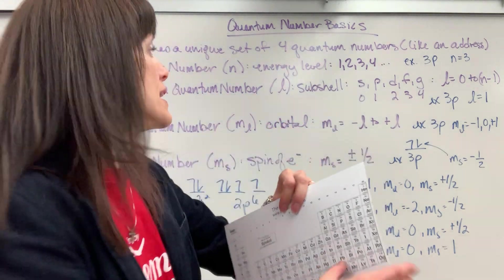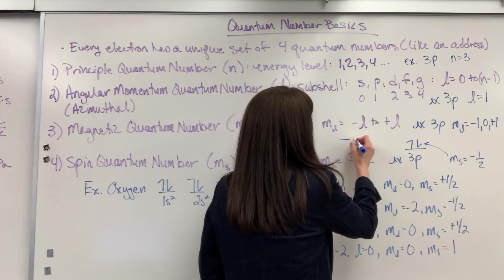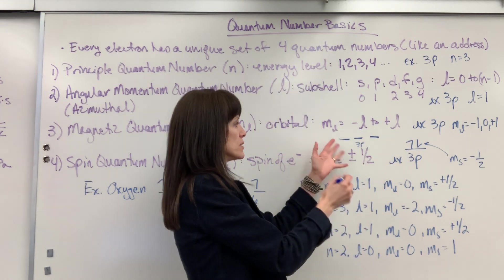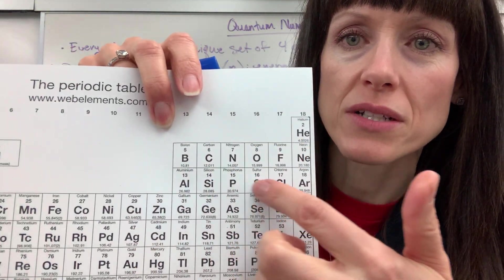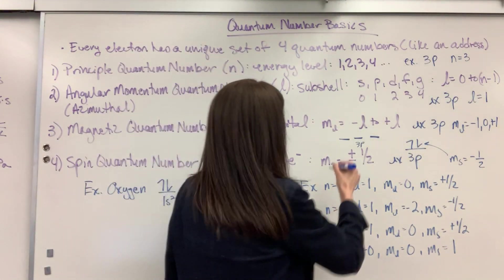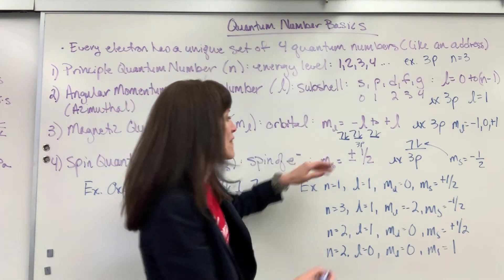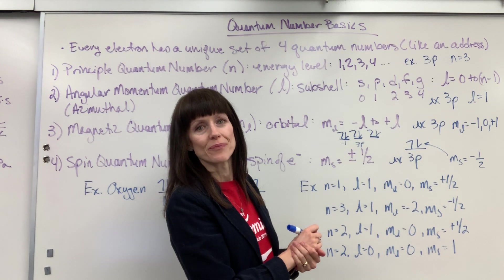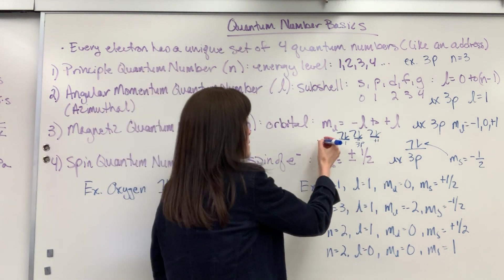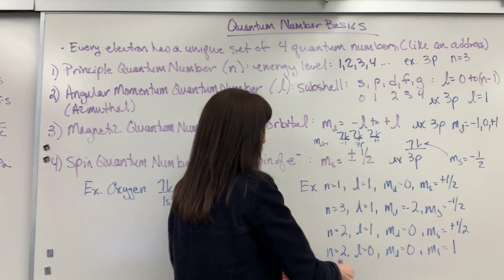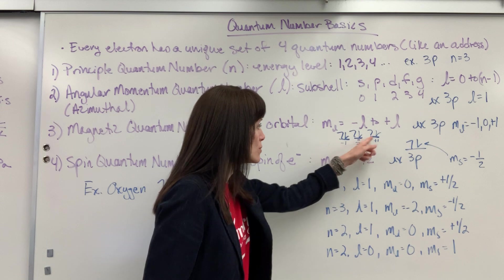If I were to draw that as orbital notation in the three P — let's say it's full, let's say it is argon — you would have three orbitals. Six electrons, third energy level, P subshell — it's argon. Using Hund's rule, one electron in each orbital first, then we go back and double up. This first orbital would be your minus one magnetic quantum number, this is your zero, and that's your positive one. We actually give a label to those orbitals — M sub L equals negative one, zero, or positive one.